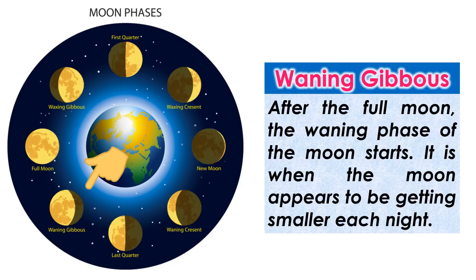Waning gibbous. After the full moon, the waning phase of the moon starts. It is when the moon appears to be getting smaller each night.